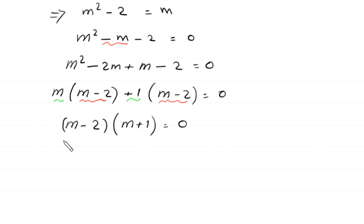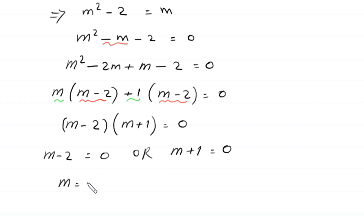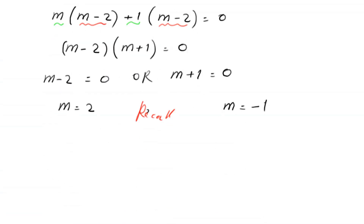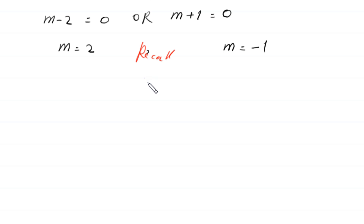Either m minus 2 equals 0, giving m equals 2, or m plus 1 equals 0, giving m equals negative 1. To find the values of x, recall that we supposed x plus 1 over x is equal to m.